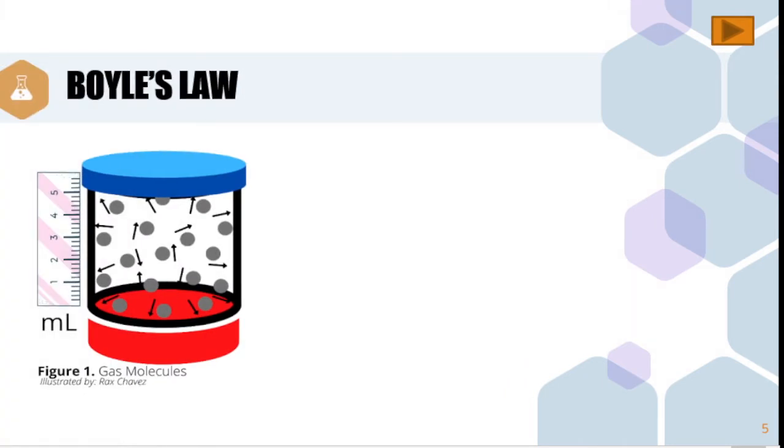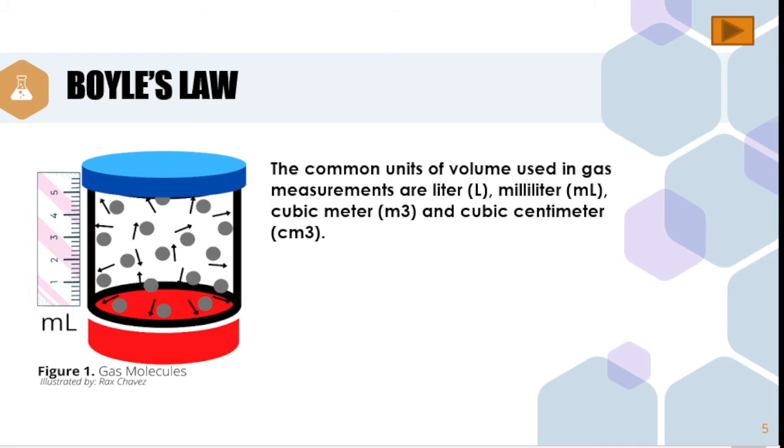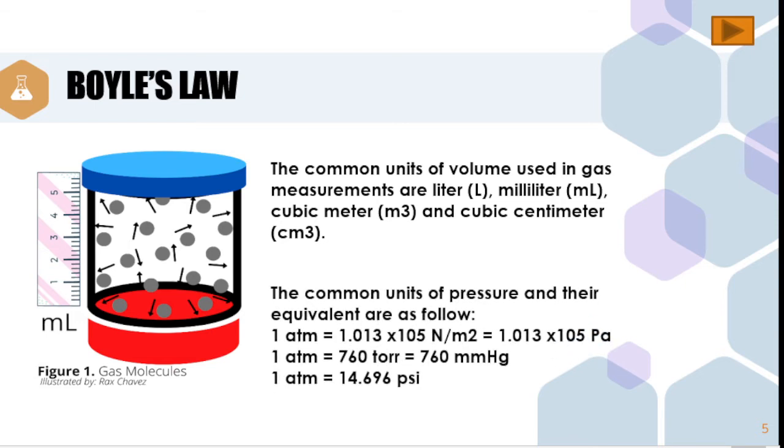In addition, there are several units of measurement that we use to indicate the volume of the gas. On the other hand, the common units of pressure and their equivalents are as follows. We have 1 atm is equal to 1.013 times 10 to the fifth power newton over meter squared, which is also equal to 1.013 times 10 to the fifth power pascal.